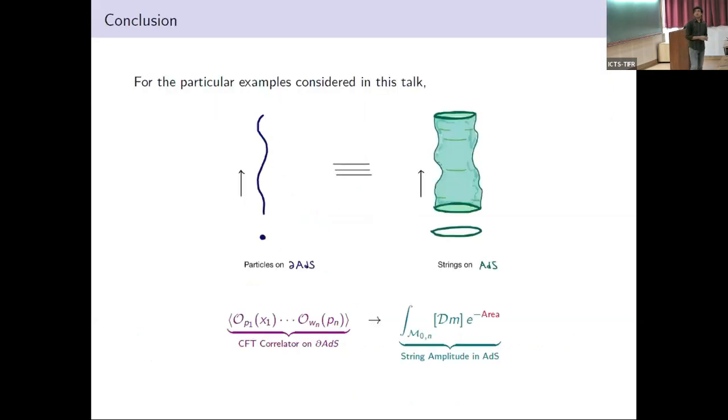In conclusion, what I have shown is that the correlator of the conformal field theory, both in 2D and 4D, for particular examples considered in the free limit where there is no coupling in the field theory, you can express that as some string amplitude, roughly as some string path integral, integral over all possible worldsheets.